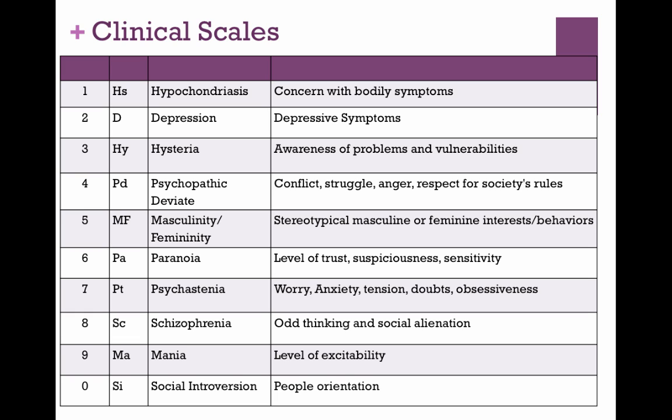Scale three is hysteria — a very old word that we do not use clinically anymore. Sometimes you'll see a one-three pattern with a dip on two, an inverted V, where people really don't understand their own psychopathology. They have an awareness of general emotional turmoil but aren't terribly insightful. They may be kind of egocentric but generally talkative and likable, using indirect measures to get attention and affection, without really understanding their psychological problems.